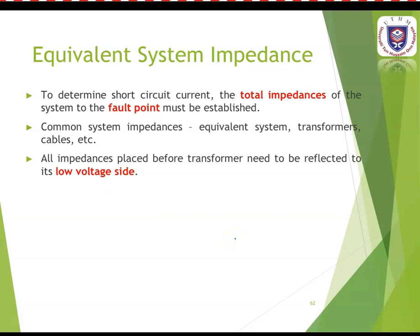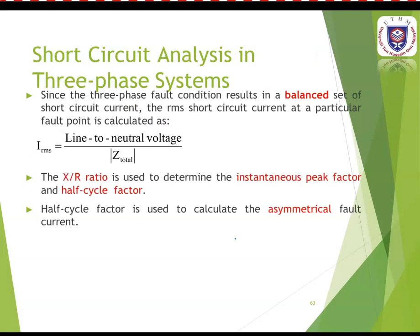To determine short circuit current, the total impedances of the system to the fault point must be established, same as voltage drop calculations. Common system impedances include the equivalent system impedance, transformer, and cable. All impedances placed before a transformer need to be reflected to its low voltage side. This is short circuit analysis in three-phase systems.